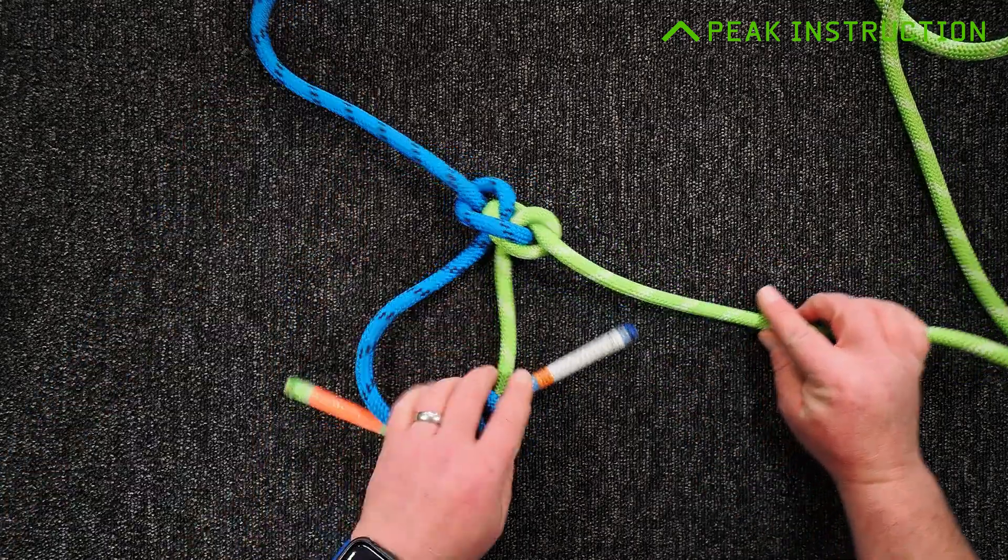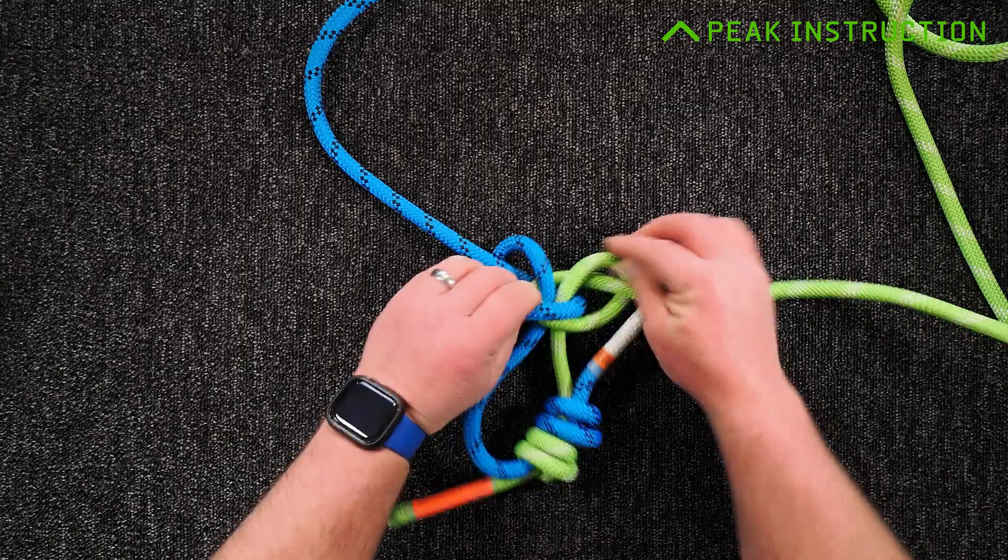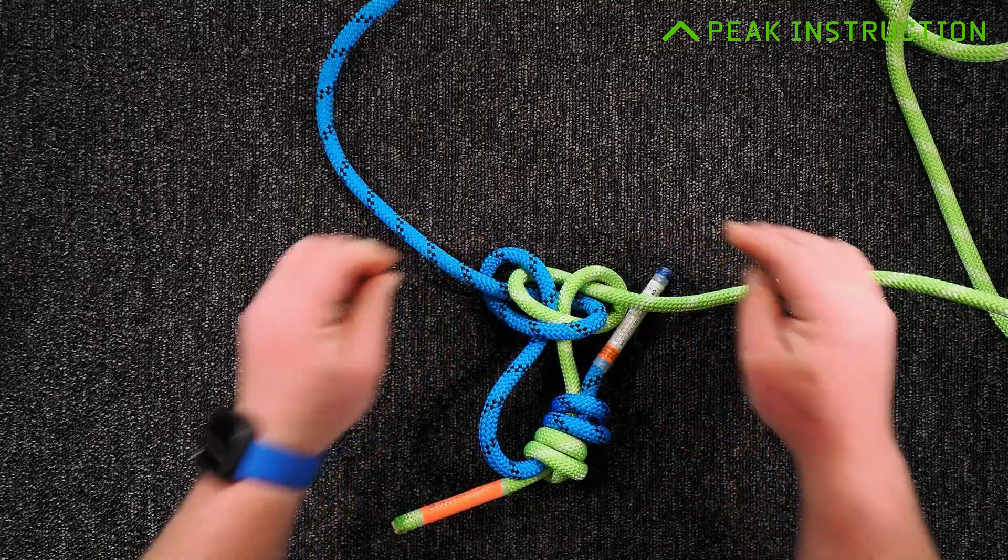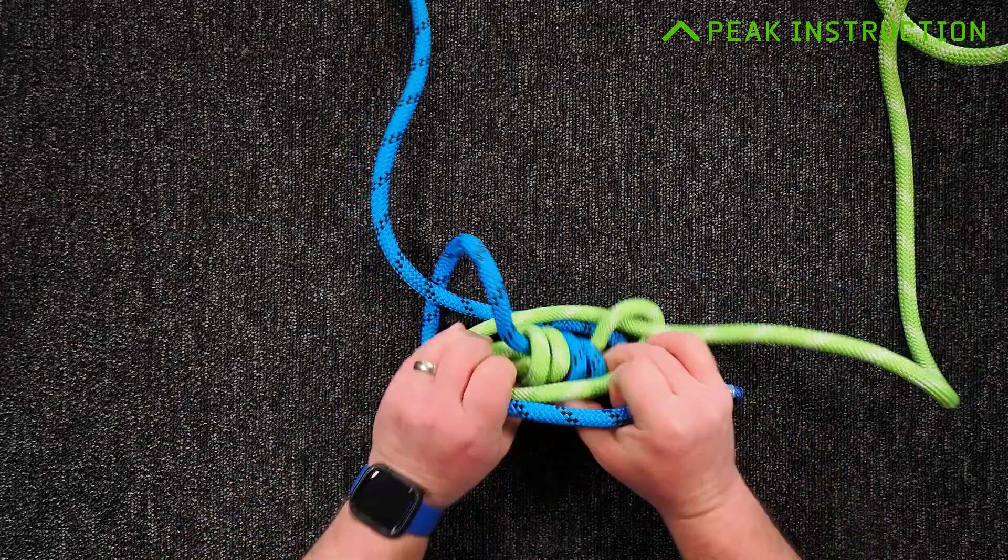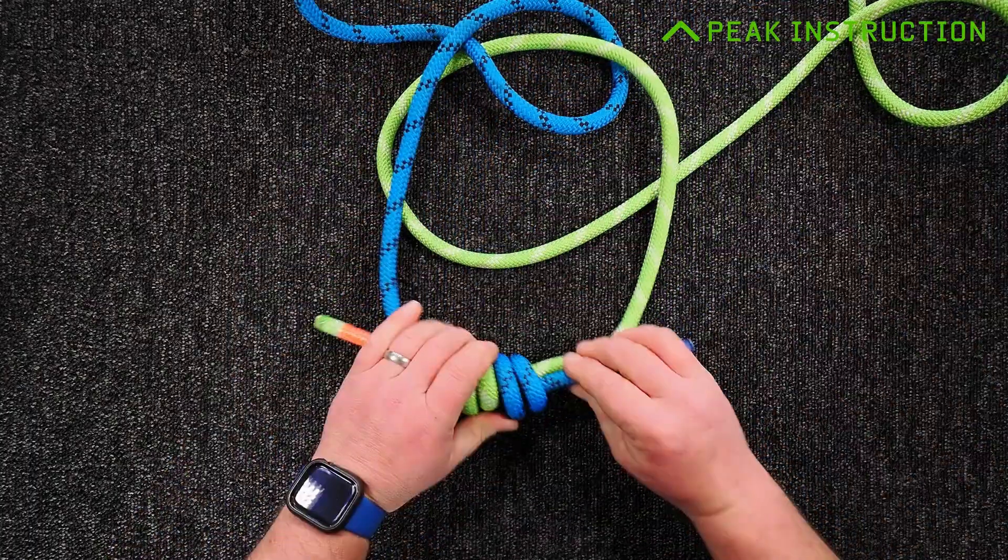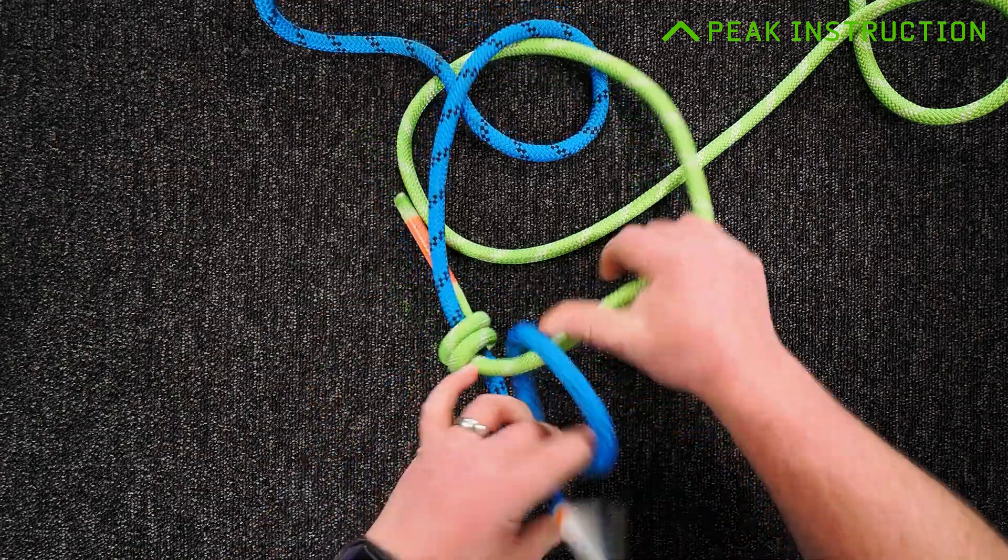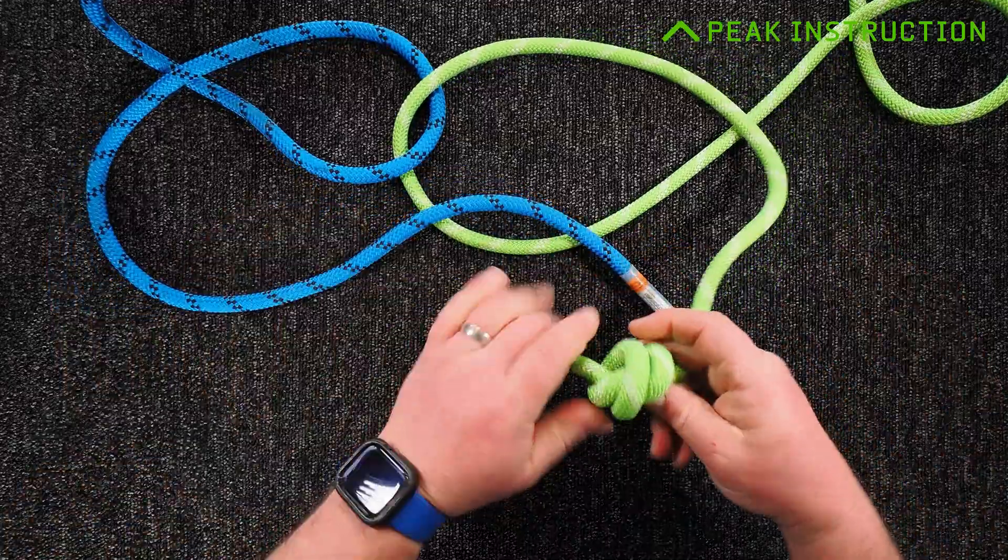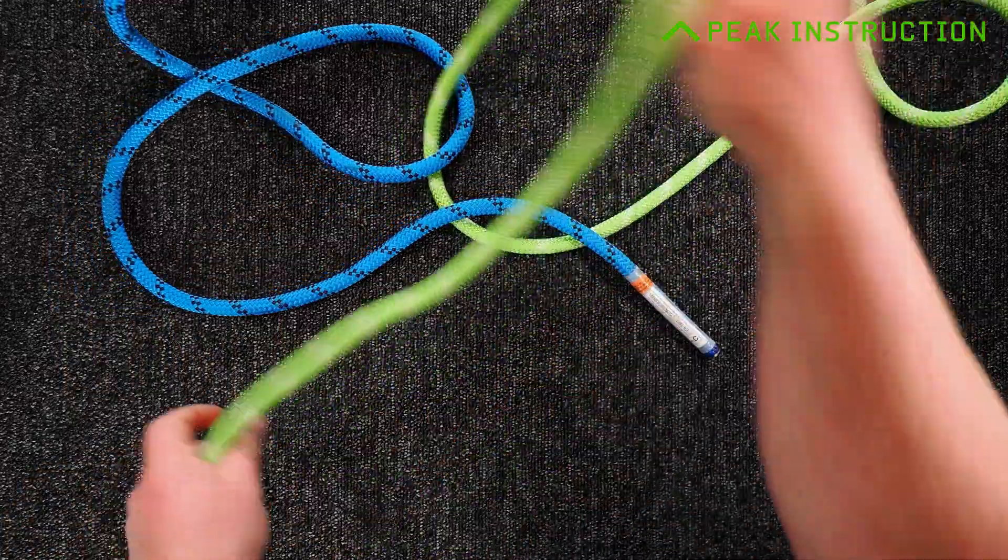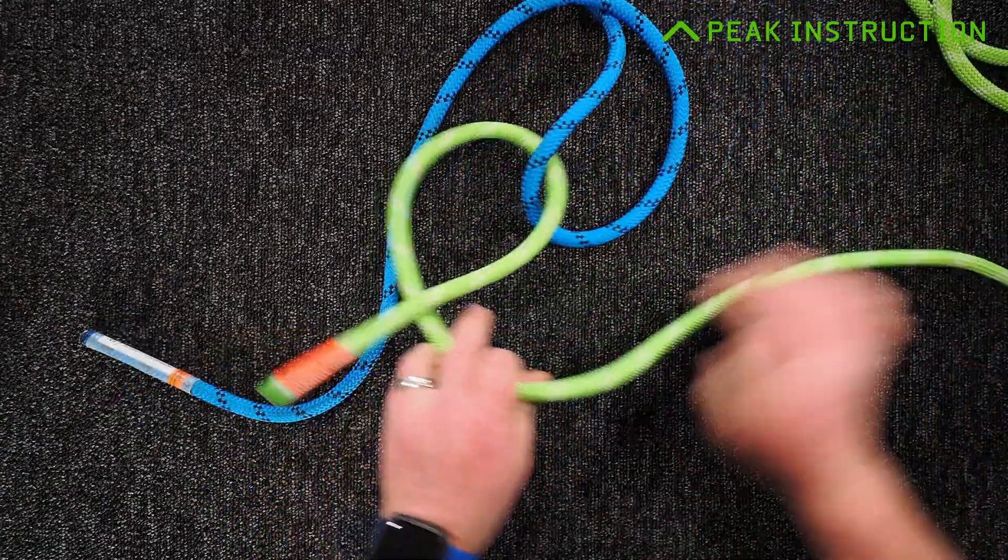There's a couple of ways you can do this. As you've seen, I've joined the ends of the ropes together first before tying the alpine butterfly. We can do it the other way around as well. If I backtrack to having two bare ends of rope here, I will show you what I mean.